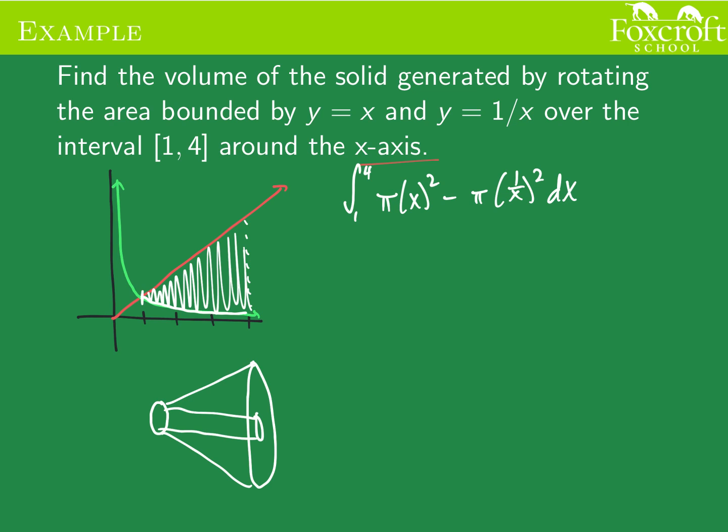You can see I even made the mistake that it's really similar to when you're just finding the area between the curves. The only difference, instead of just using the two values, you're taking these circles which are pi r squared and you're subtracting those away from each other. So you use the pi r squared for the circle rather than just the value itself.